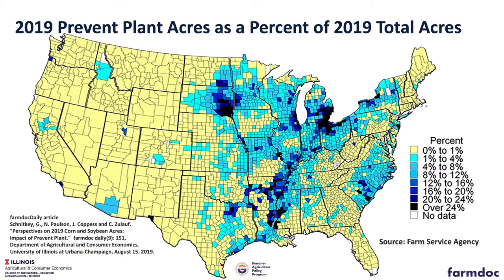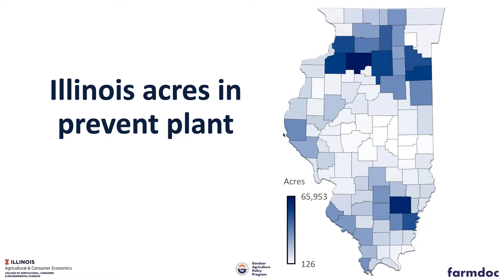Prevent plant was big in Ohio and North and South Dakota, and here in Illinois we had our share. Zeroing in on Illinois, most of those prevent plant acres were corn prevent plant. Bureau County was among the highest. The middle part of the state did not see very large prevent plant acres.